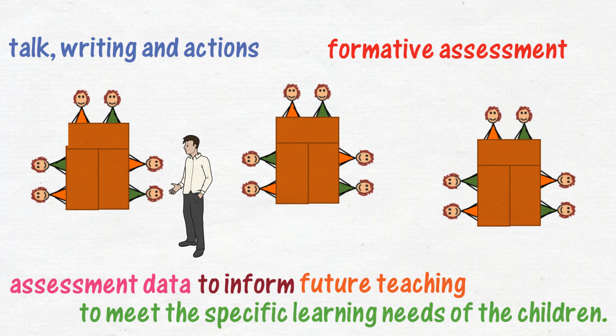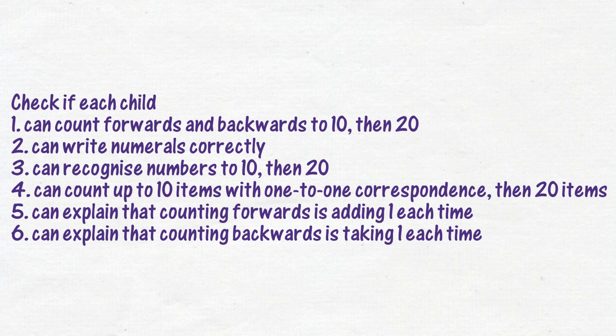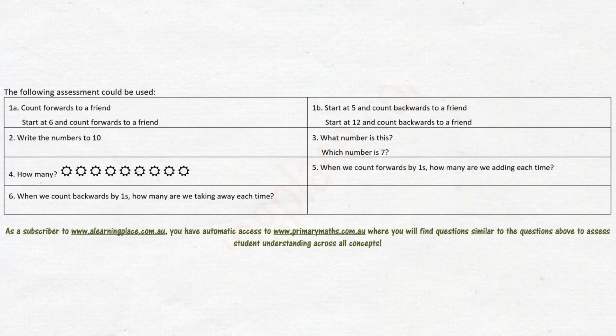But how do you initially know each child's current level of understanding? Check if each child has the understandings listed in the top part of the Term 1 scope and sequence. As a subscriber to A Learning Place A Teaching Place, you have automatic access to Primary Maths, where you will find questions similar to those above to assess student understanding across all concepts and all levels.